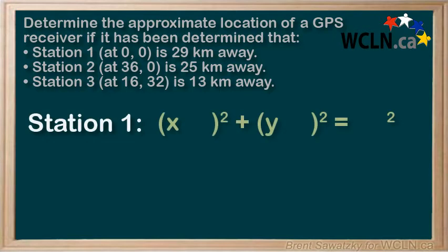For station one, x squared plus y squared, that is there's no shifting of the circle's center in this one, and the distance between the station and the receiver is effectively the circle's radius, so 29 squared.